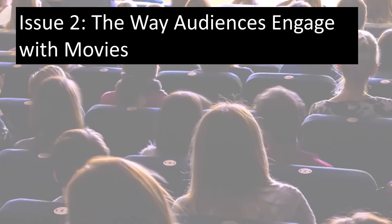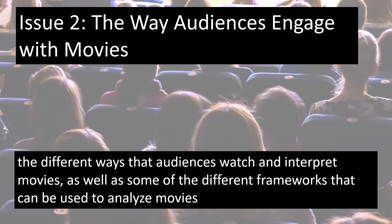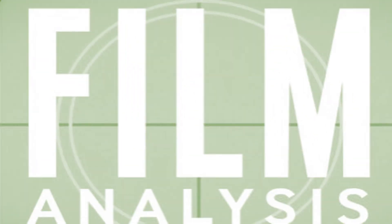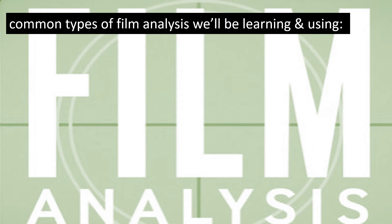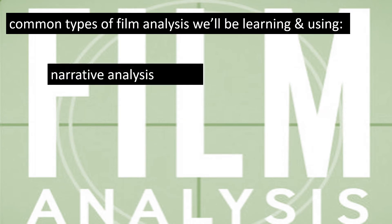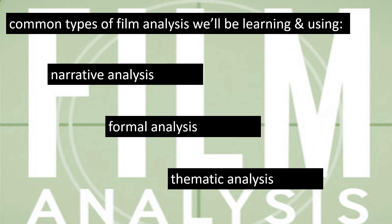The second issue related to movies examined in this course is the way that audiences engage with movies. In Film 116, we will explore the different ways that audiences watch and interpret movies, as well as some of the different frameworks that can be used to analyze movies. Three of the most common frameworks for analyzing movies are narrative analysis, formal analysis, and thematic analysis. While these are not the only types of movie analysis we will learn about, they are the ones we will be using the most in Film 116.